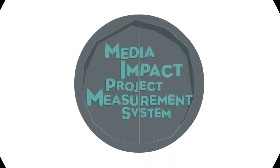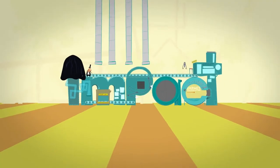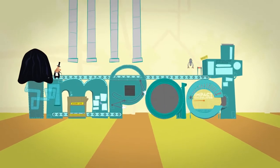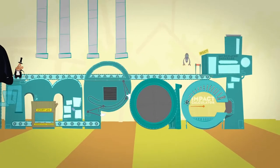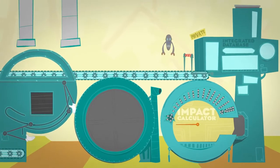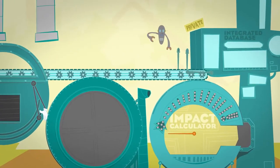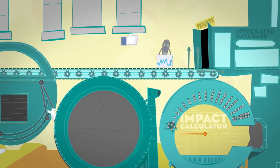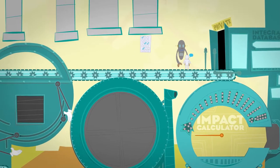Meet the Media Impact Project Measurement System. It's an open source system for determining how media can engage audiences and determine what works and what doesn't. It combines information about how your story is being seen. Everything from web traffic and Facebook likes to offline actions and survey research.